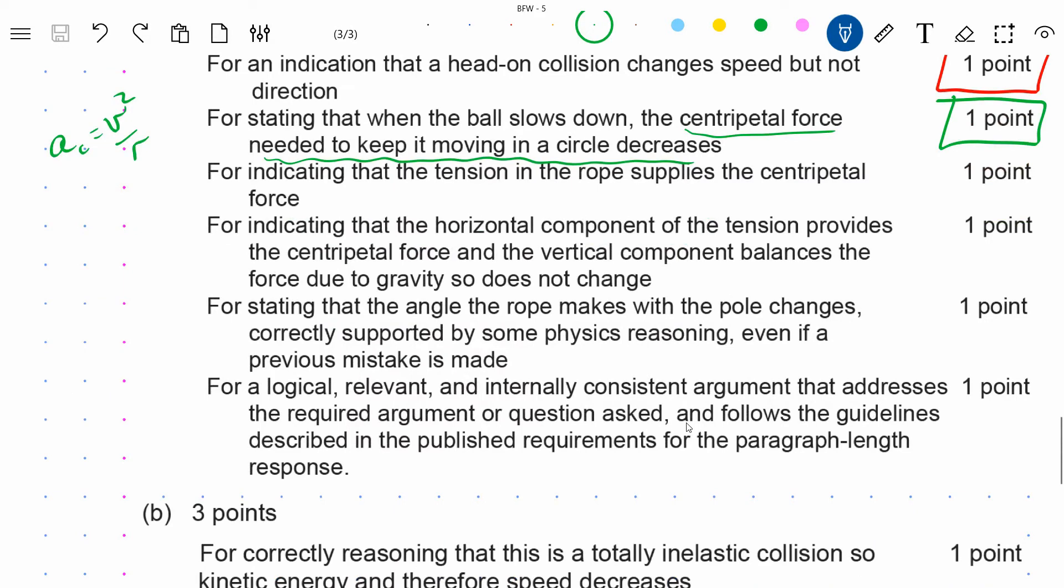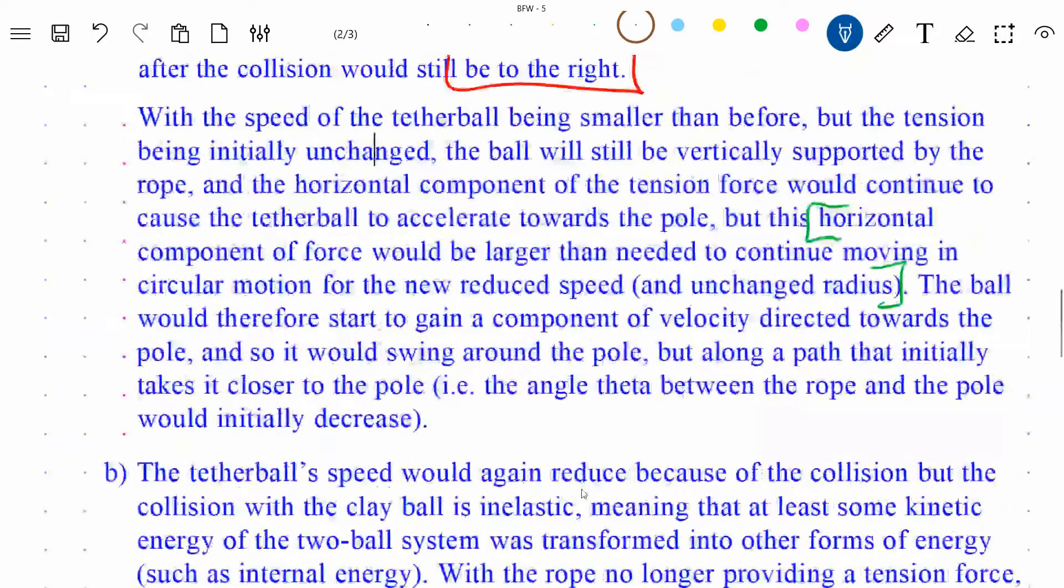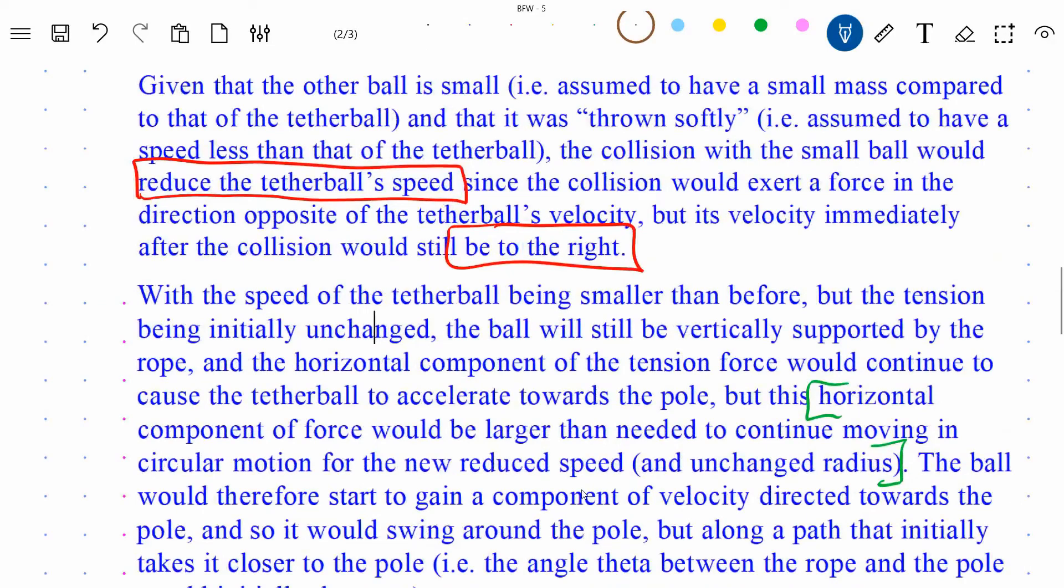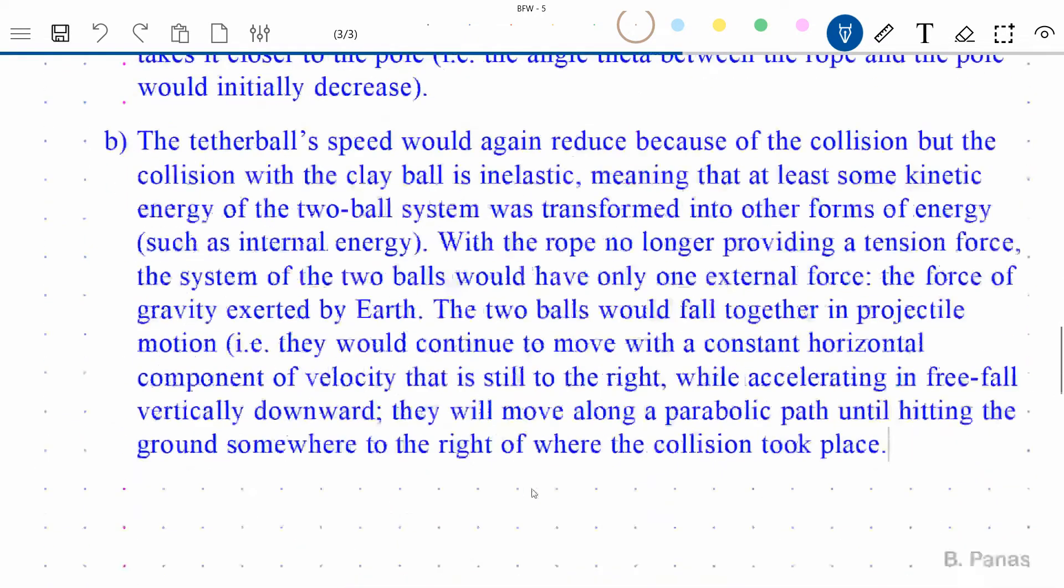Okay, the next point right here for indicating that the tension in the rope supplies the centripetal force. So I think that kind of preceded in my answer what I just pointed out to you, but it's in here. The horizontal component of the tension force would continue to cause the tetherball to accelerate towards the pole, and I think that's the second time I mention this fact, but either way, it's in there. So that point would be earned.